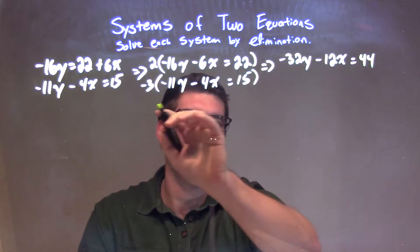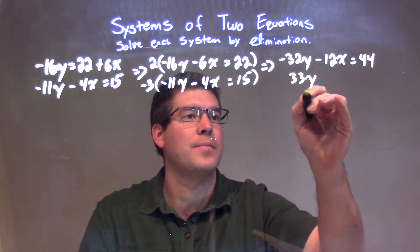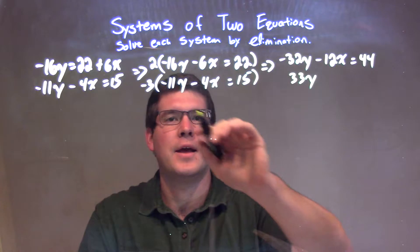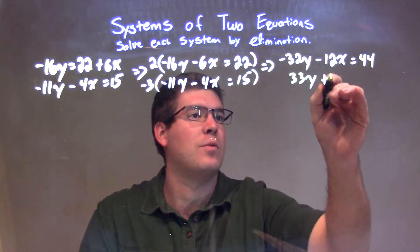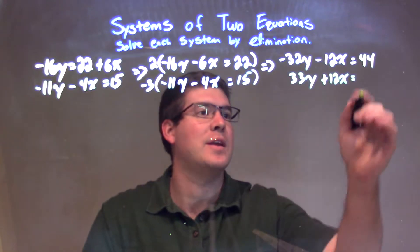Same thing for negative 3. Multiply that across. Negative 3 times negative 11y is a positive 33y. And negative 3 times a negative 4x is a positive 12x. And 15 times a negative 3 is a negative 45.